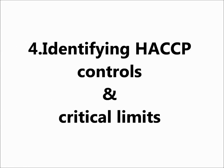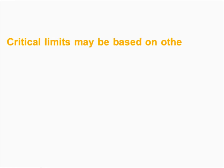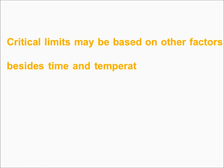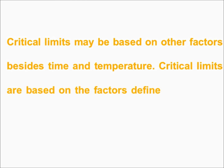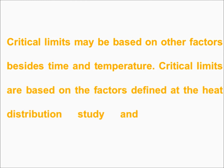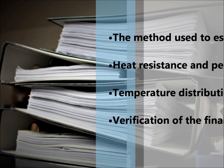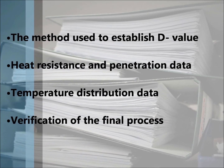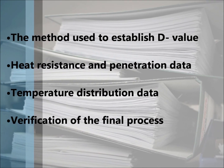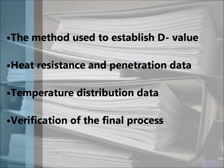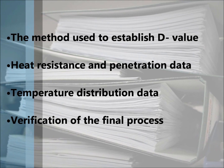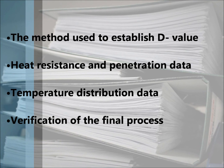Step 4: Identifying HACCP controls and critical limits. Critical limits may be based on factors besides time and temperature. Critical limits are based on the factors defined in the heat distribution study and the process equipment. Records of validation procedures and studies should include: method used to establish D-value, heat resistance and penetration data, temperature distribution data, and verification of the final process.